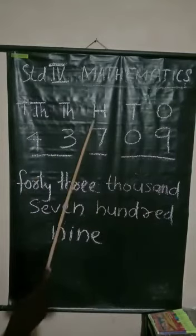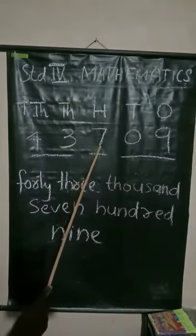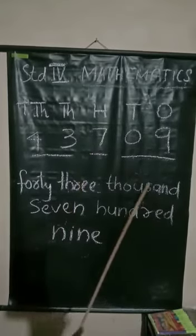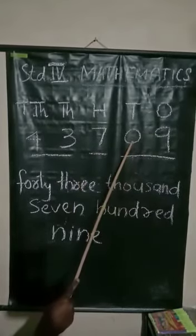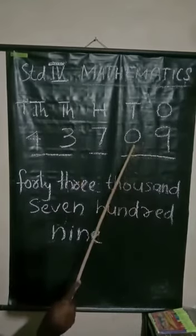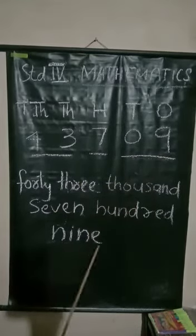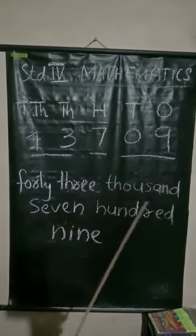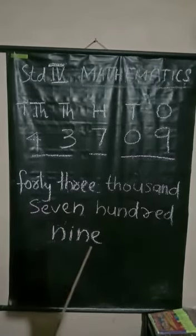How many hundreds are there? Seven hundred. And tens and ones make the number? Zero nine — zero nine means nine. So we have the number forty-three thousand seven hundred nine.